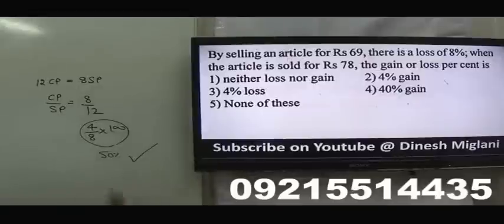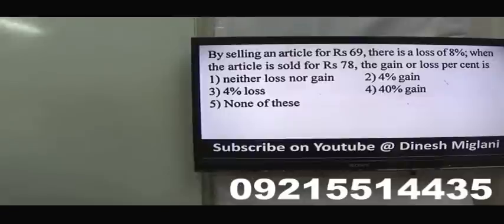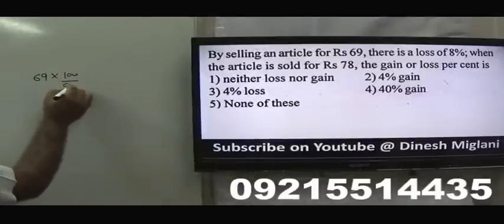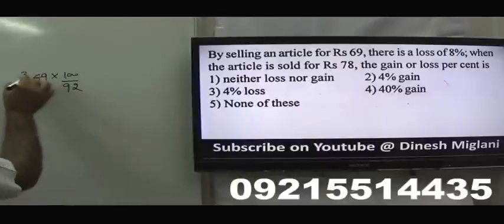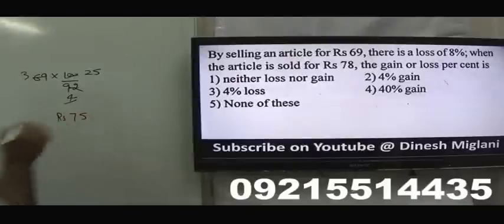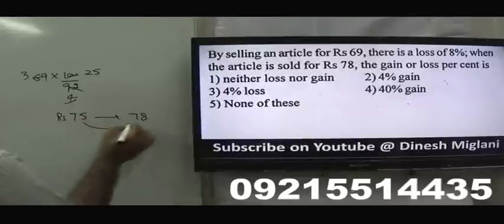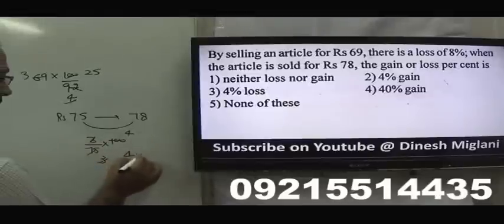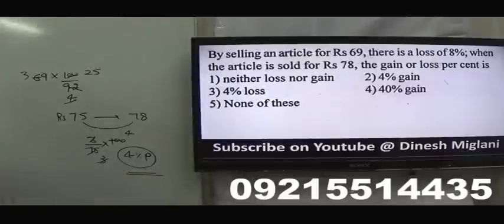By selling an article for ₹69, there is a loss of 8%. When the same article is sold for ₹78, what is the profit or loss percentage? Cost price = 69 × 100/92 = ₹75. Selling price is ₹78, profit = 3. Profit% = 3/75 × 100 = 4%. Answer: 4% gain.